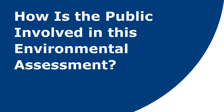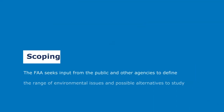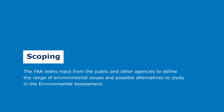The FAA will involve the public throughout the environmental assessment process. Now, during the scoping process, the FAA seeks input from the public and other agencies to define the range of environmental issues and possible alternatives to study in the environmental assessment.